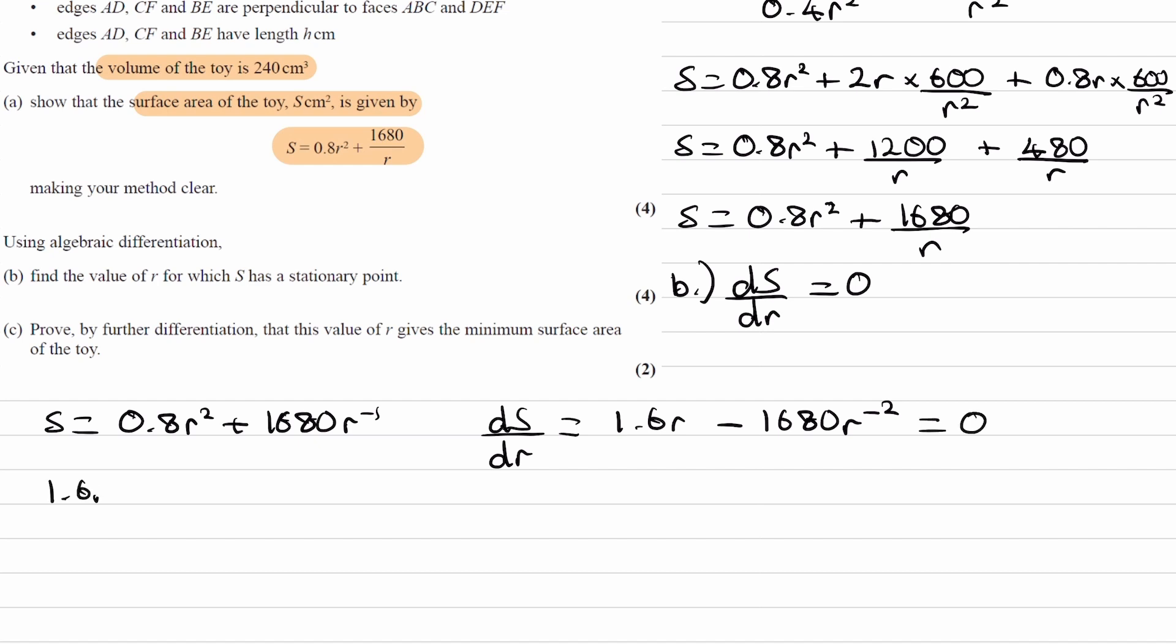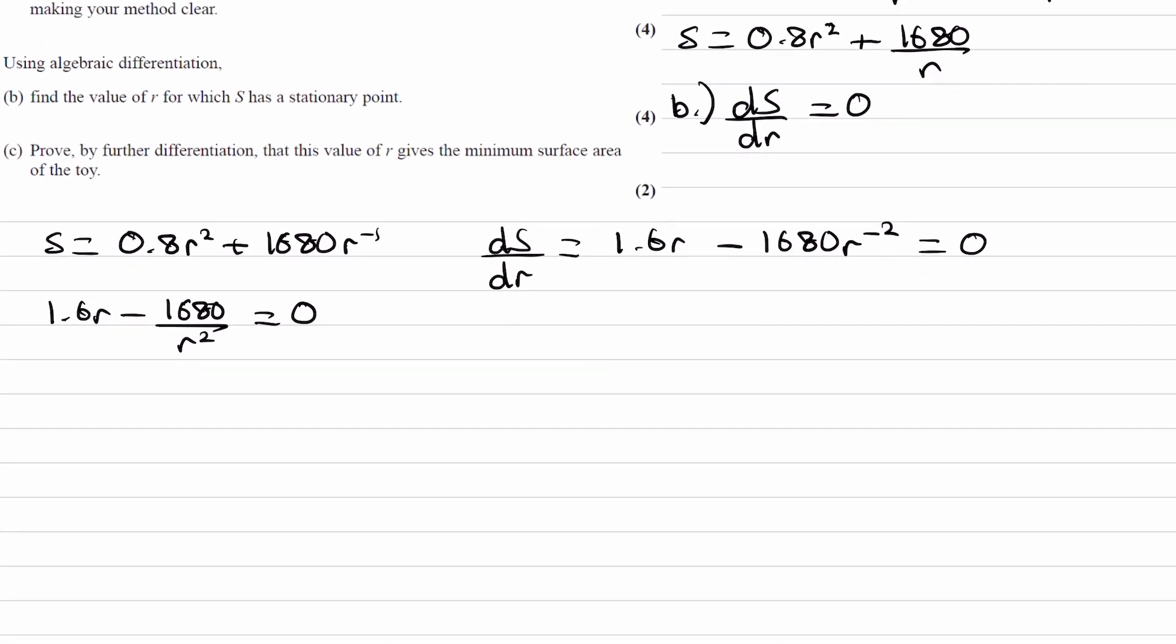So we get 1.6r minus 1680 over r² equals 0. I'll times everything by r². 1.6r³ minus 1680, that's equal to 0. And then rearrange, 1.6r³ is equal to 1680.